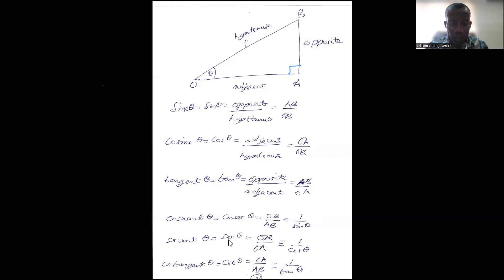Secant theta (sec theta) is OB over OA, and that is equivalent to one over cos theta. And cotangent theta (cot theta) is OA over AB, and that is one over tangent theta.